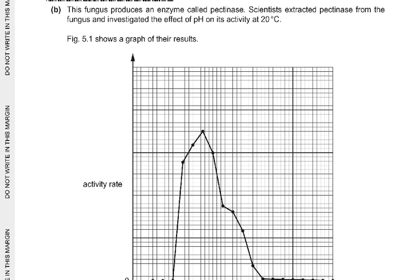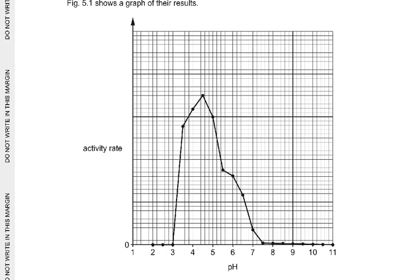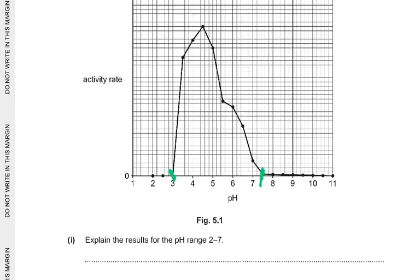Coming to part B: the fungus produces an enzyme called pectinase. Scientists extracted pectinase and investigated the effect of pH on its activity at 20 degrees Celsius. Figure 5.1 shows the results. There is no activity between pH 2 and 3, then activity increases as pH goes toward 4, peaking at about pH 4.4, then decreasing, with no activity after pH 7.5.